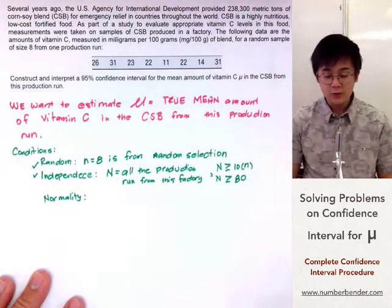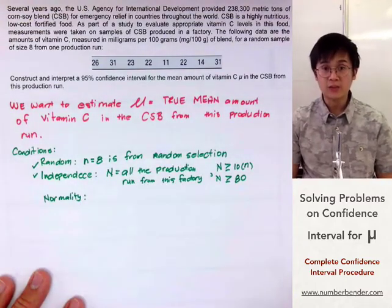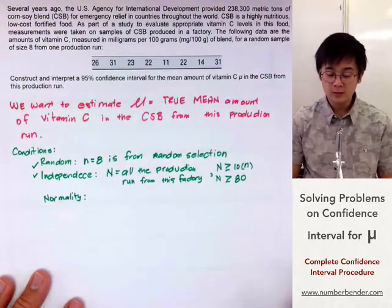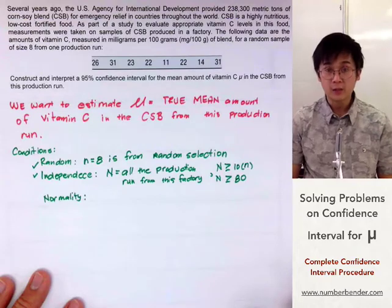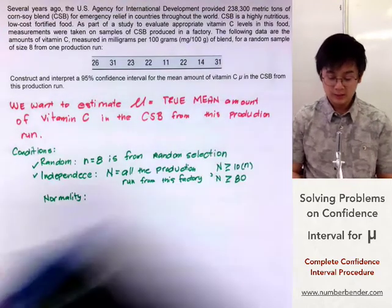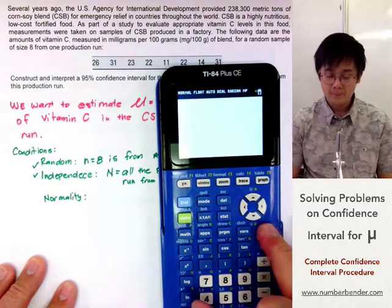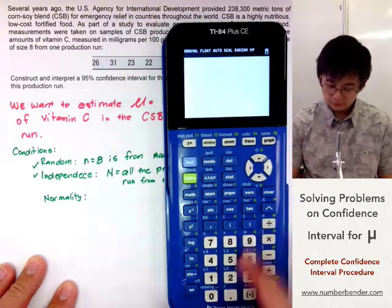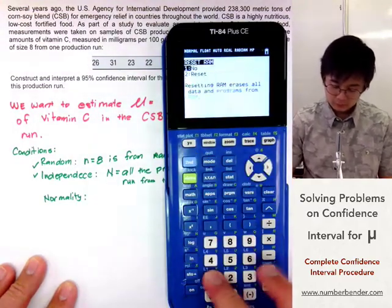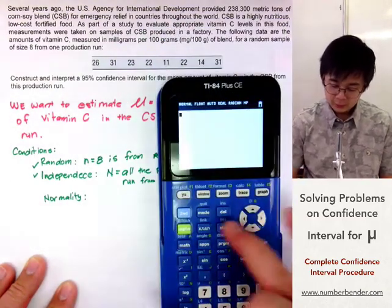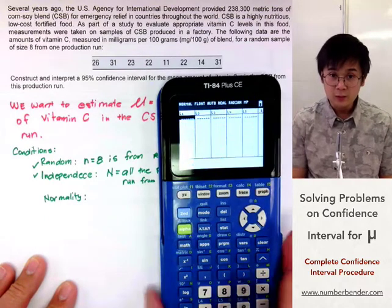And now for our normality condition. Since there's no mention about the shape of our population, we're going to check the normality of our sample using our TI-84. So stat, edit, and on list 1...